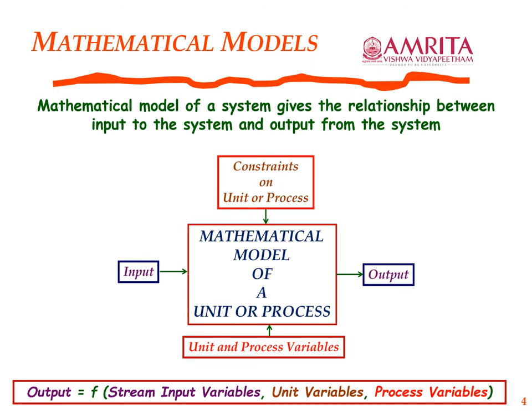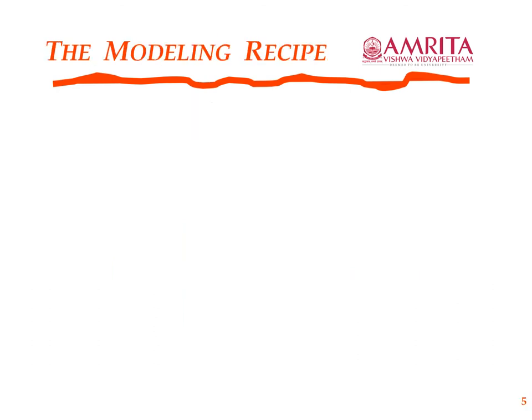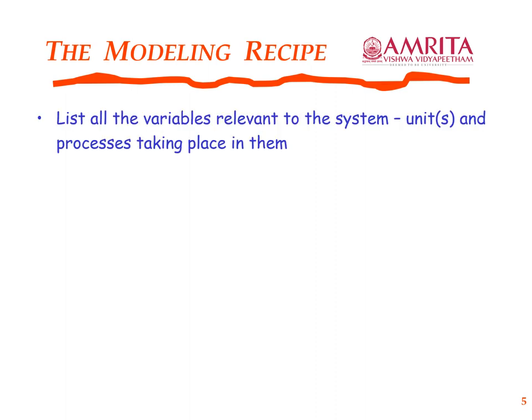Now, what are the various steps involved in the modeling recipe? First, you have to identify all the variables relevant to the system: the input and output stream variables, the unit variables, and the process variables. These four types will each be dealt with individually in subsequent lectures.